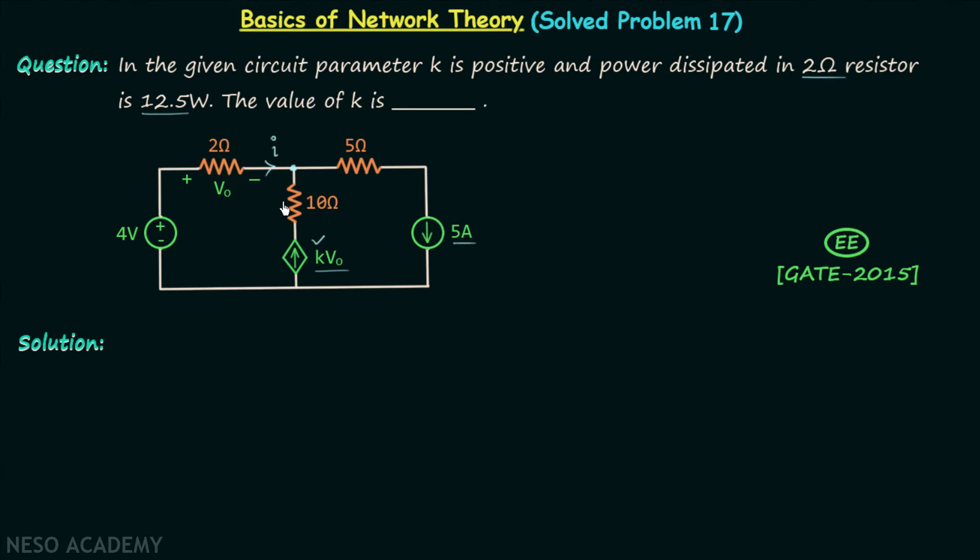Now when we apply KCL at this node, we will have I plus k times v0 equal to 5. I we can write as v0 divided by 2. So we have v0 divided by 2 plus k times v0 equal to 5.